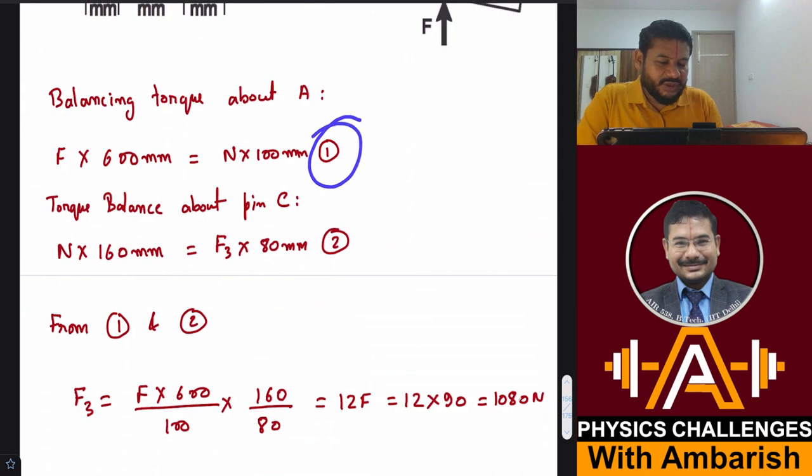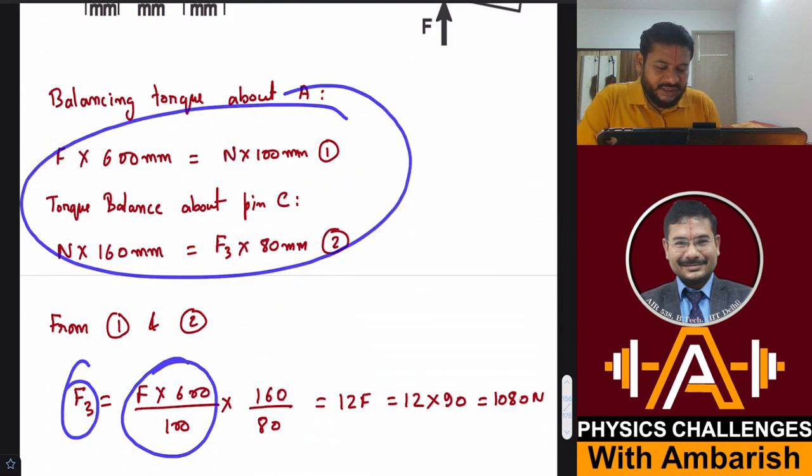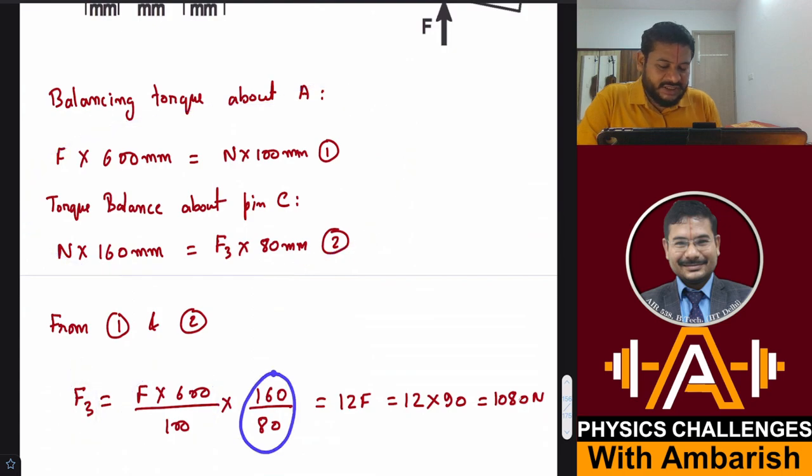From equation 1 and 2, you can eliminate N and get a relationship between F' and F. From these two equations, F' is F into 600 upon 100 into 160 by 80, that is 12F, and that is 1080 N. We get exactly the same answer using the torque method also.